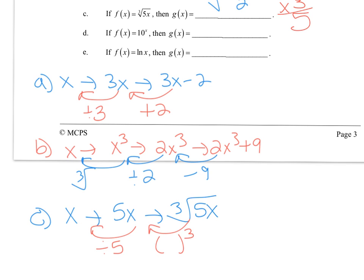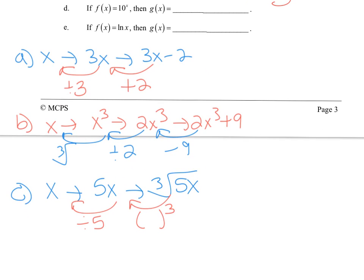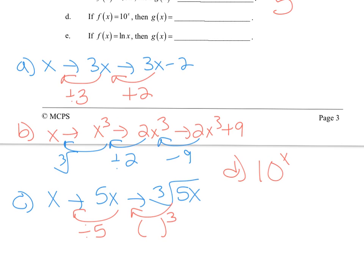For part d, when you have an exponential like 10 to the x, we know the inverse is a logarithm. To write that as a log, it's log base 10 of x. We don't write the 10 because the most common base of a logarithm is 10.